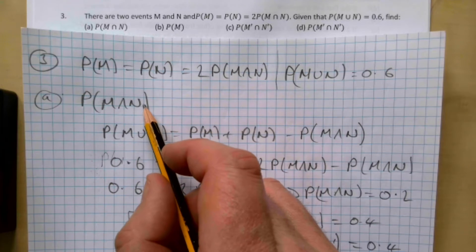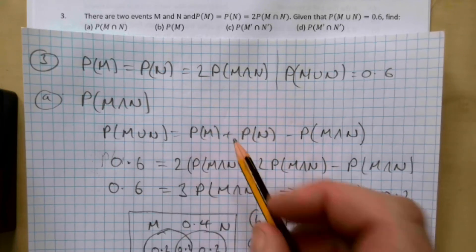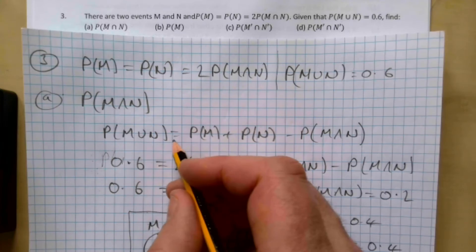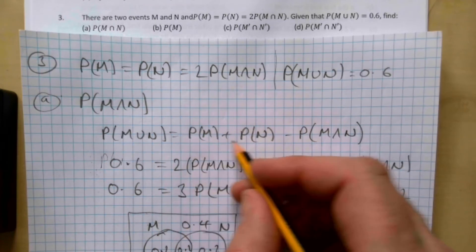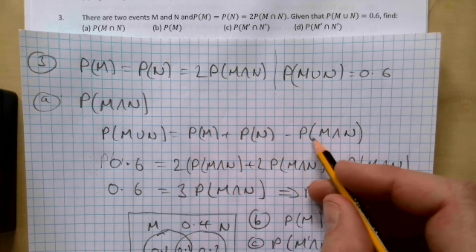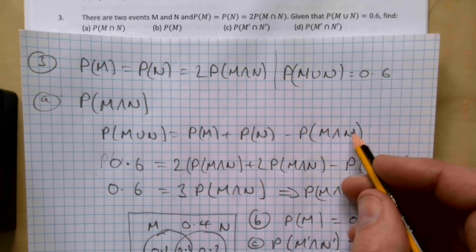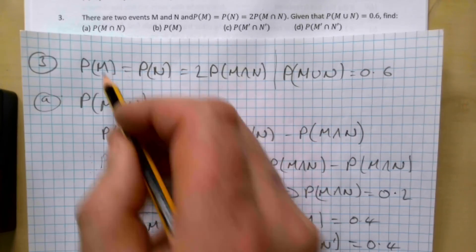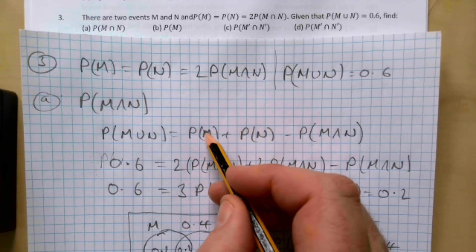then we're going to do M and N. We should be able to do it using this formula here: the probability of M or N equals the probability of M plus the probability of N, take away the probability of M and N. Because we know probability of M equals two times the probability of M and N, I